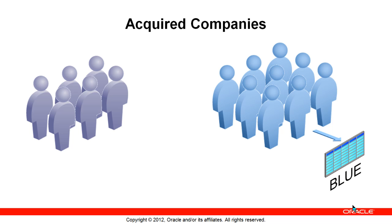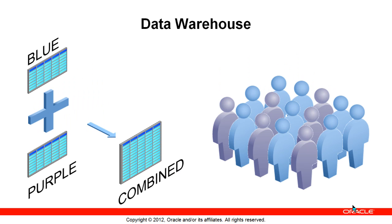Your company just acquired another company, the purple company. They also have employees, the purple people, and they also have names, addresses, and phone numbers. For political reasons, you cannot close down the purple computer center just yet, but you need to have a central database of all the employees, both blue and purple. So all three tables — the two source and the one target — will all be the same kind of tables but will have different data. If you combine the blue employees table with the purple employees table, you can create a data warehouse of the total employees. What data integration can do is take the two source tables and create one big combined one.